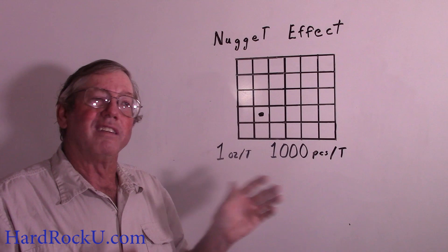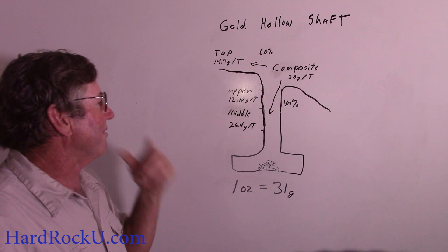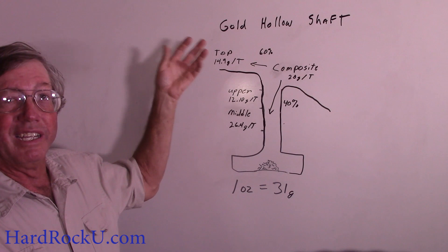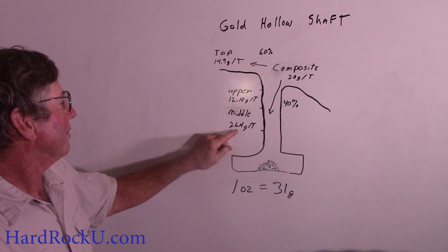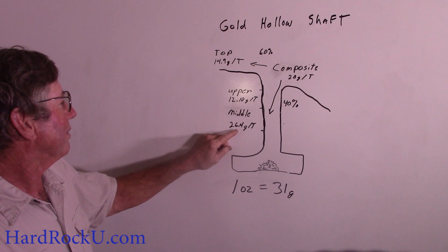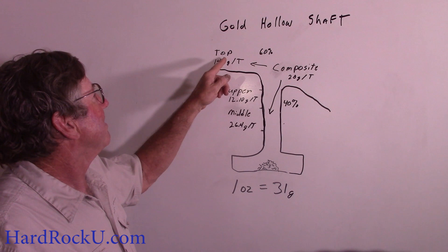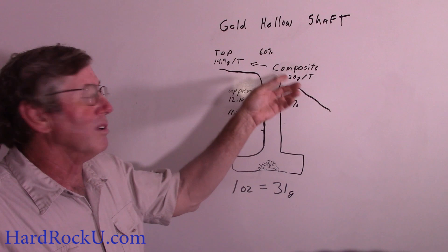Now let's get on to the samples themselves. This is a diagram of the Gold Hollow shaft — surface up here, about a 35-foot shaft. There are a couple of cross cuts at the bottom following the vein in each direction, and a pile of debris from stuff sloughing off over time. At the very top, the sample I was taking at the end of the sample video ran 14.9 grams per ton. In the upper part of the shaft it was 12.1 grams per ton. In the middle of the shaft it was running 26.4 grams per ton. I took about 60% from the top and about 40% from the middle for the 200-pound composite sample. The calculations come out to 19.5 grams per ton, which, considering the nugget effect, is very close agreement with 20 grams per ton. I'm very comfortable that this number is fairly accurate.